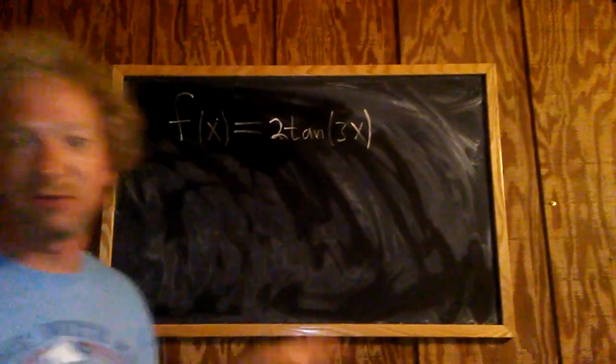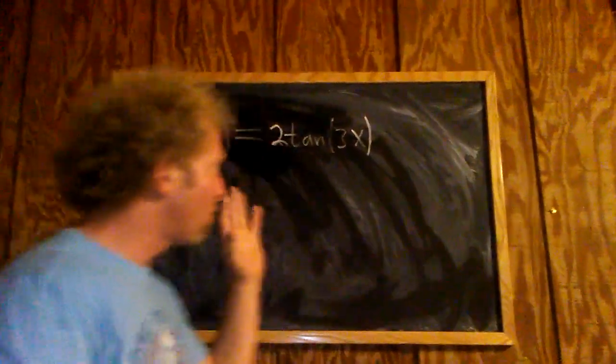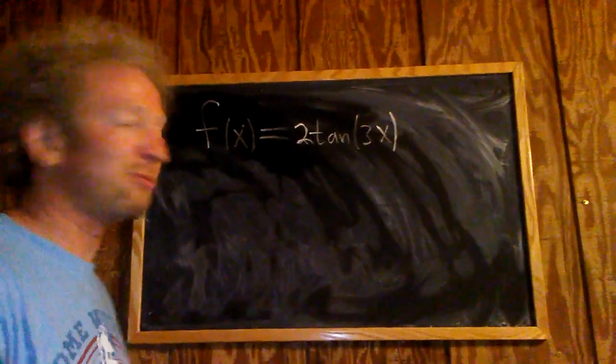This function f(x) equals 2 times the tangent of 3x. And what we're going to do is find the vertical asymptotes of this function.